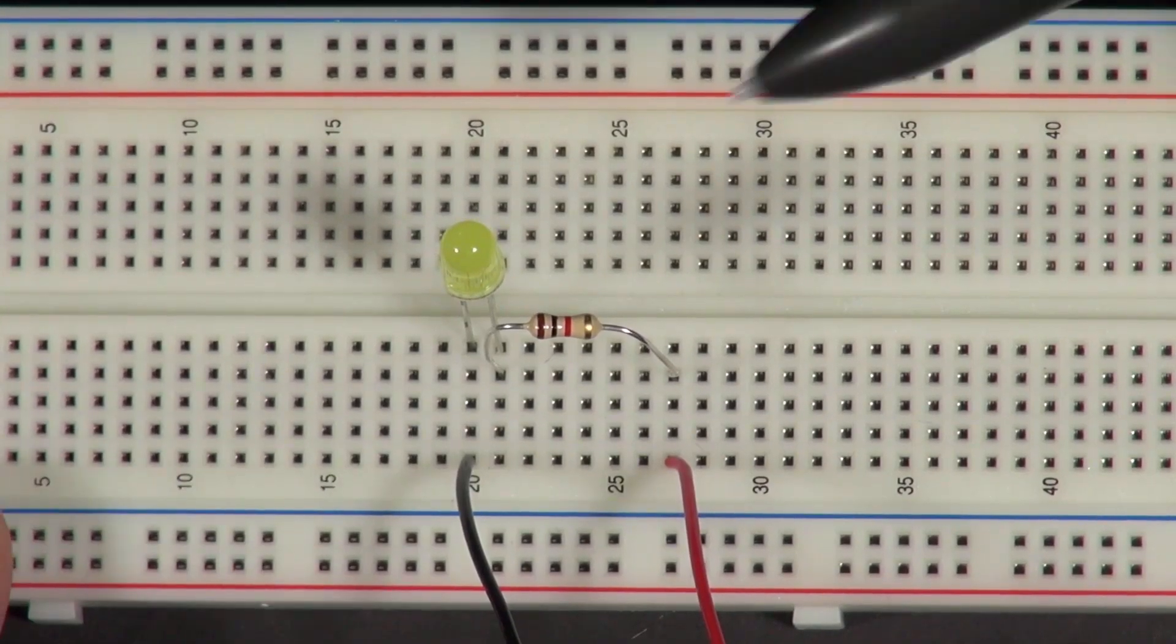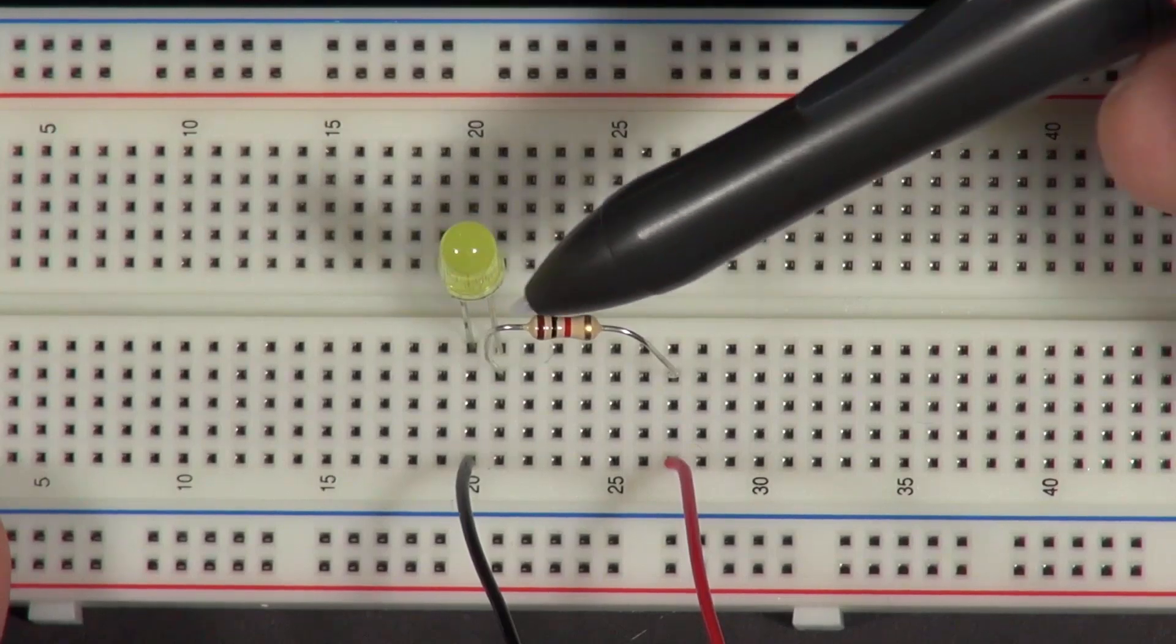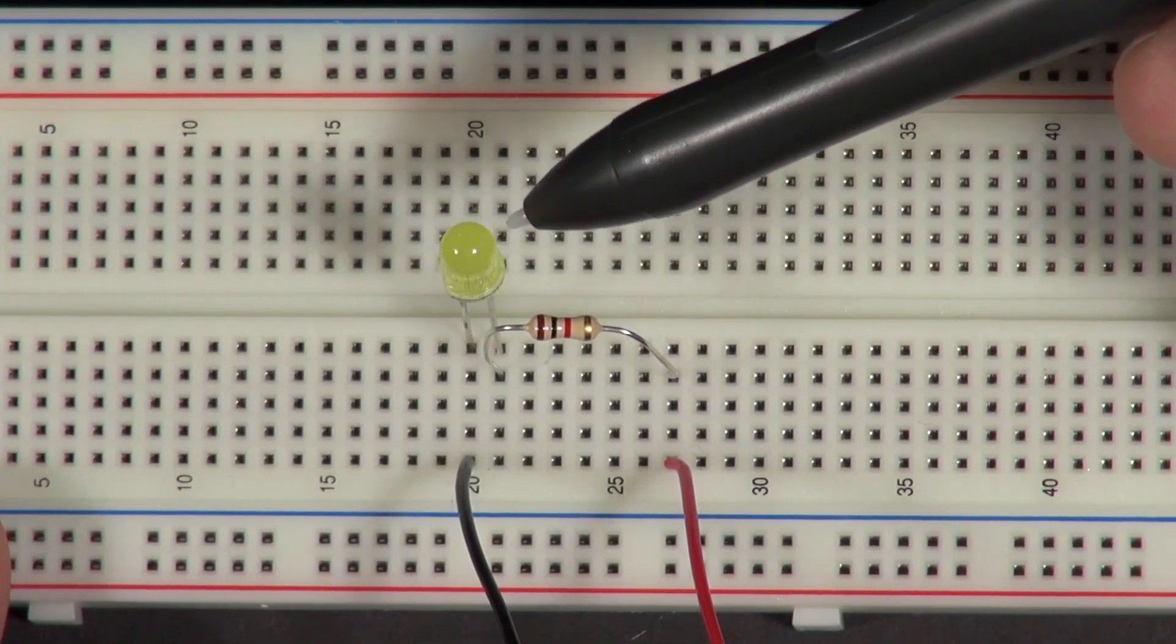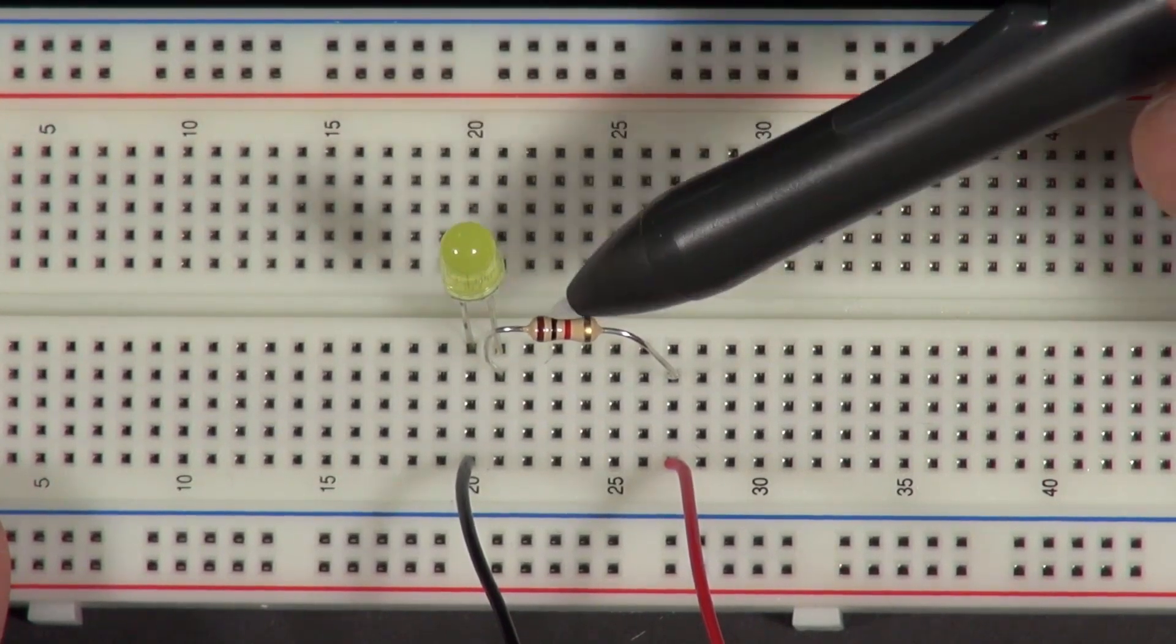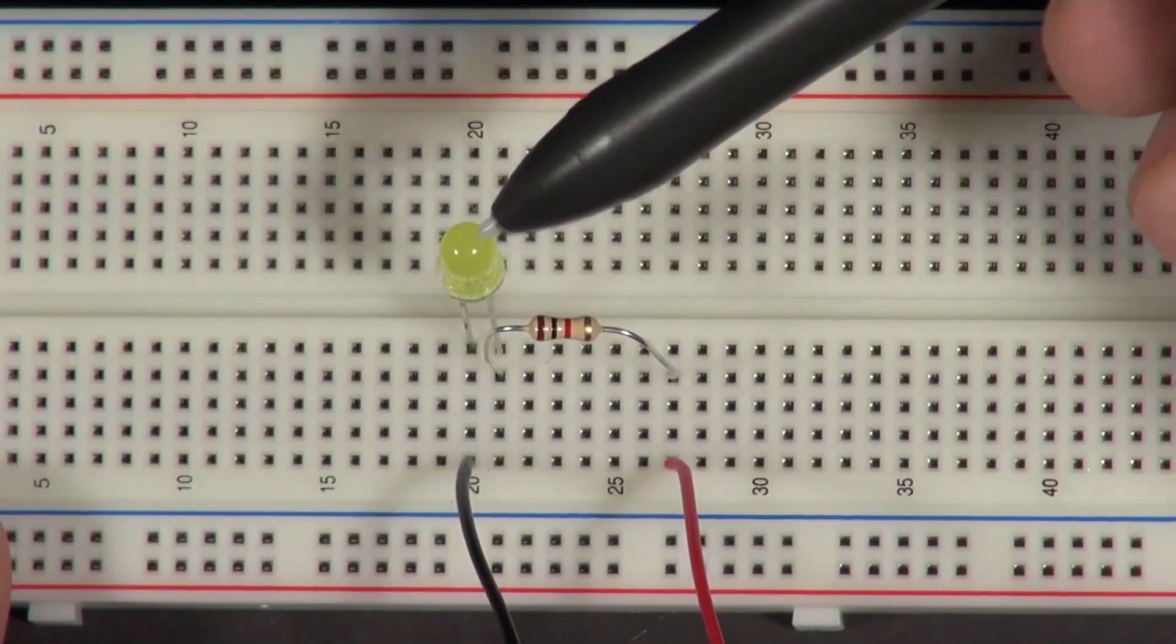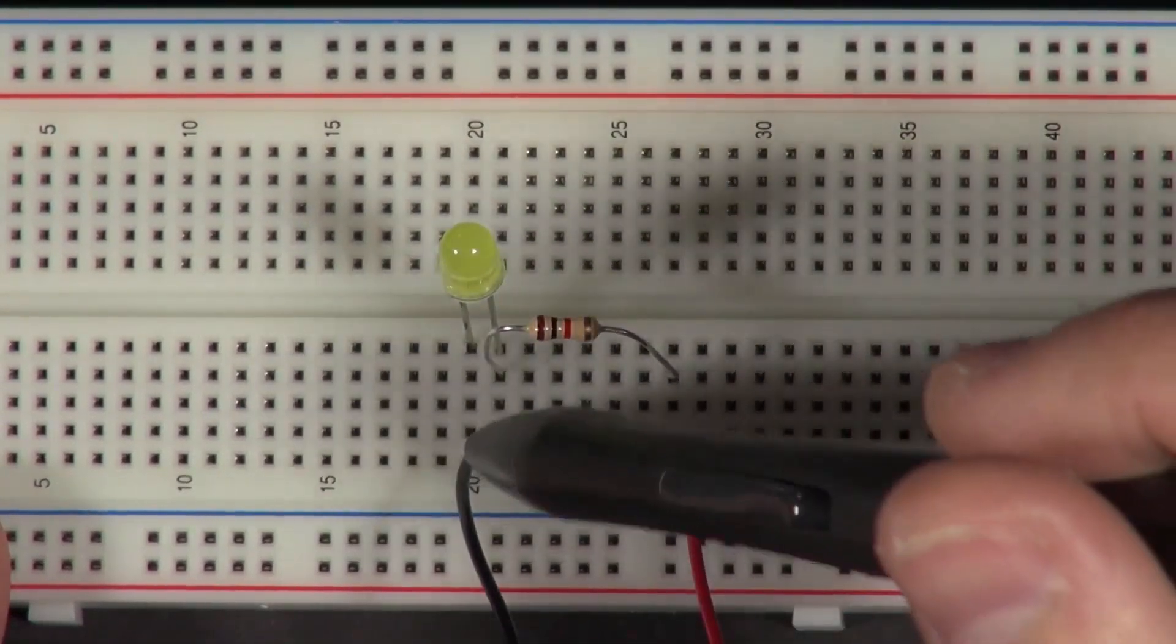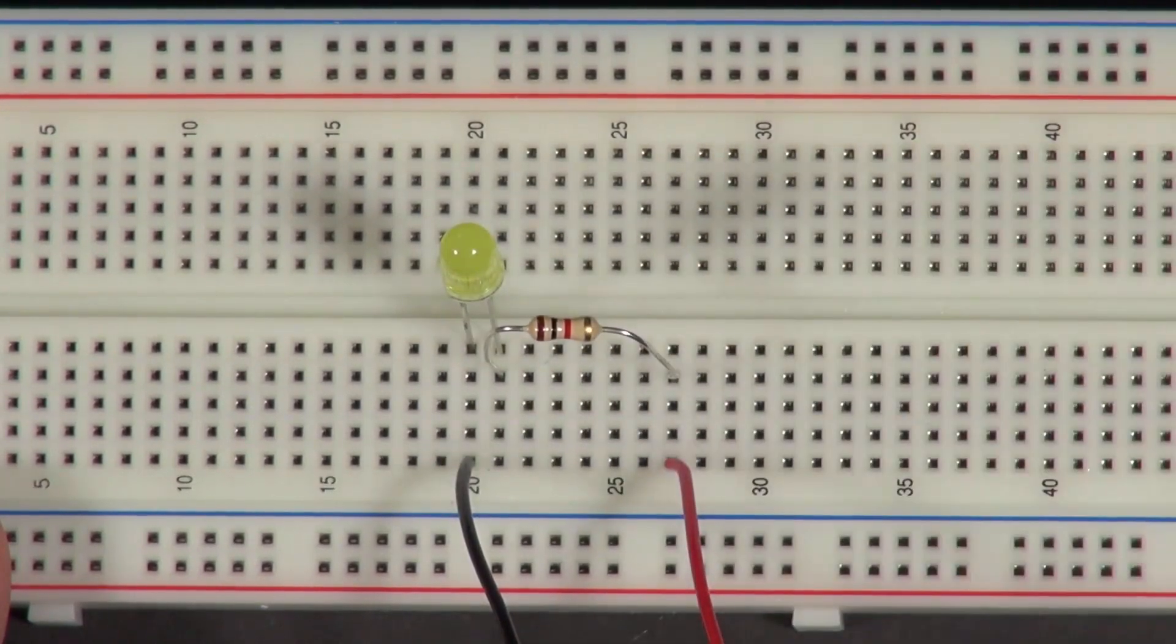In the last video, we built this circuit with an LED and a resistor. We were using this resistor to limit the current through the LED so that the LED would only draw the 20 milliamps of current, and the resistor would drop any excess voltage so the LED would only operate at the 1.9 or 2 volts that it requires. We were connected up to this laboratory power supply that allowed us to adjust the voltage with quite a bit of precision.